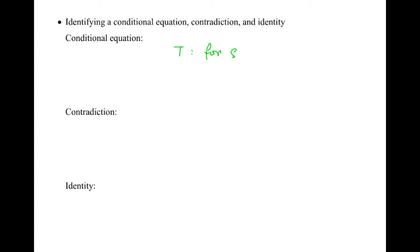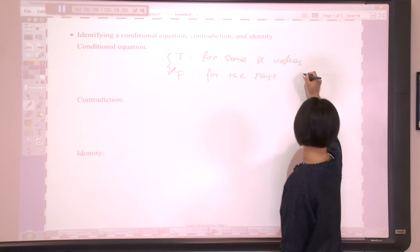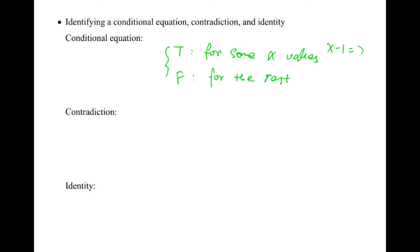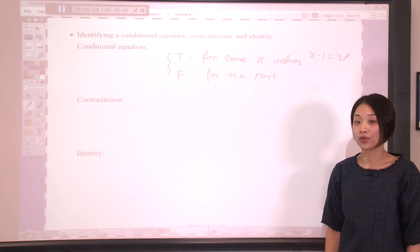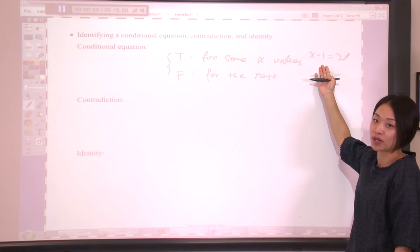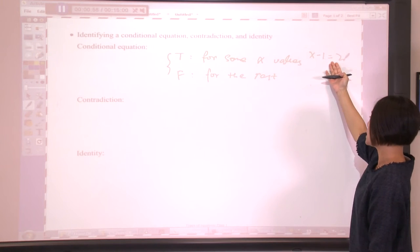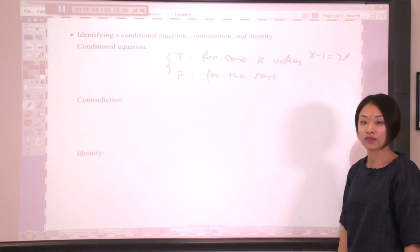To be a conditional equation, it means this equation is true for some x values, but false for the rest. For example, x minus 1 equals 2. We know only when x equals 3, this equation is a true statement. For any other number, after we plug back, it will be a false statement. So x minus 1 equals 2 is a conditional equation.